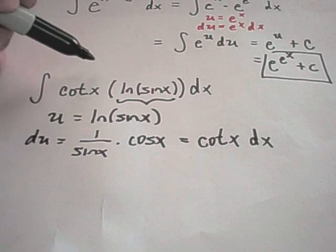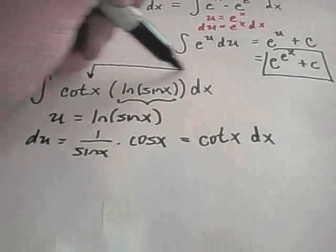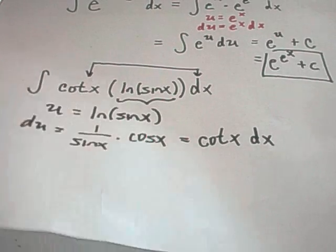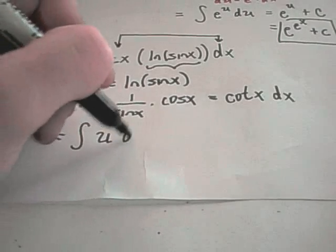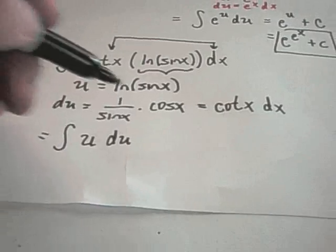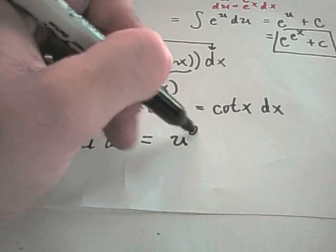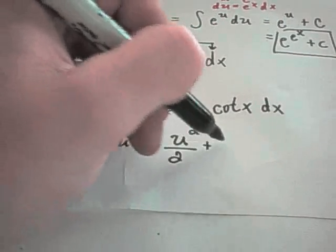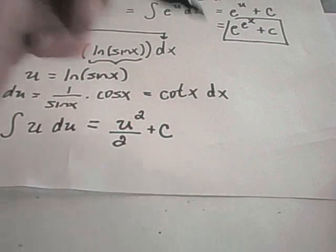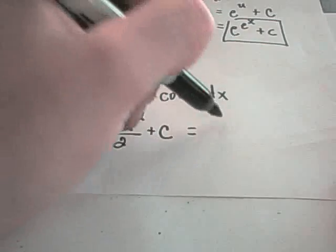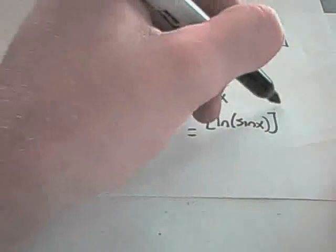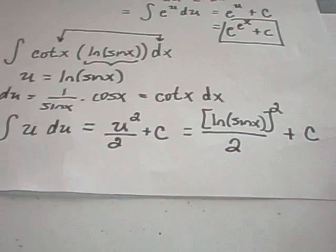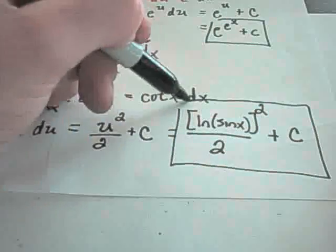So the du term is going to take care of the cotangent x dx, and then u is everything that's left over. So really all I have to do in this problem is integrate simply u du. This is like having x to the first. So I'll get u squared over 2 plus c. And again, all you have to do now is just simply replace what u is equal to. So we'll have ln of sin x all being squared over 2 plus c. Okay, and that would be your final answer in this case.